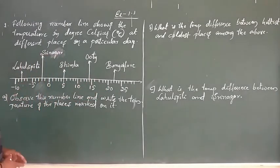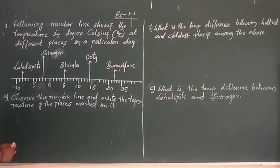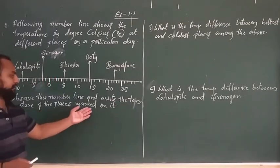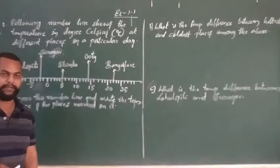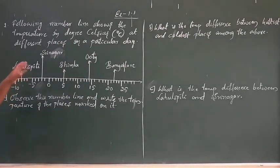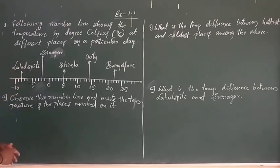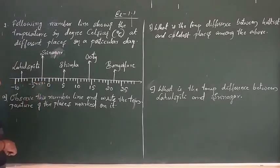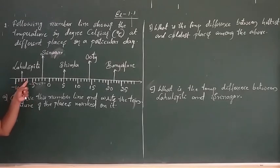The first question: observe this number line and write the temperature of the places marked on it. By observing this number line using the arrow mark indicators, the temperature values go: 0, minus 1, minus 2, minus 3, minus 4, minus 5, minus 6, minus 7, minus 8.